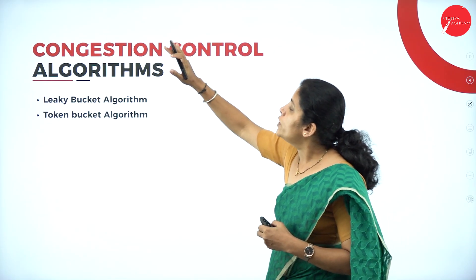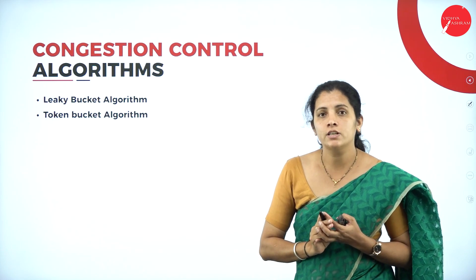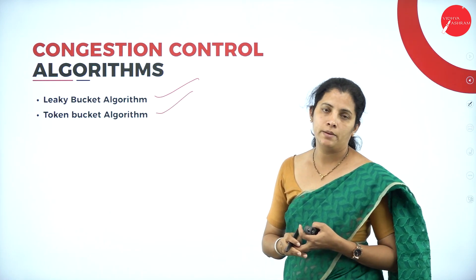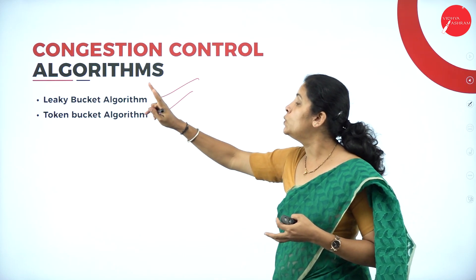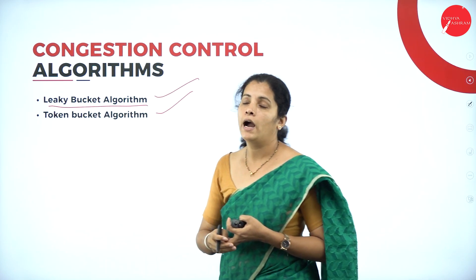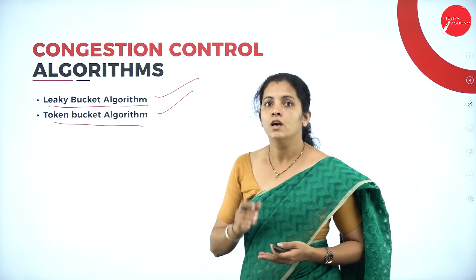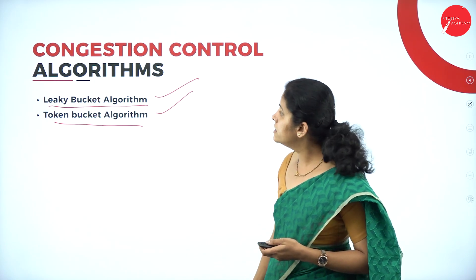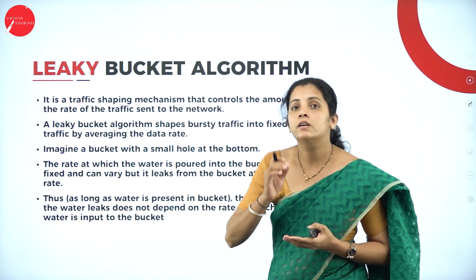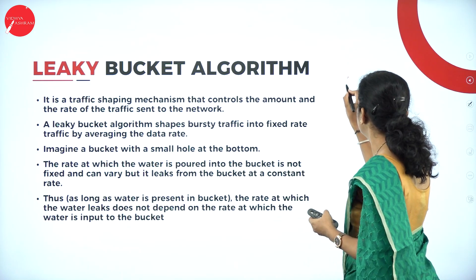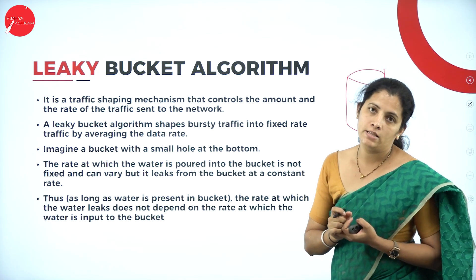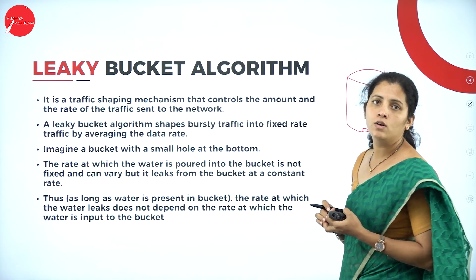We are going to have two types of congestion control algorithms: the leaky bucket algorithm and the token bucket algorithm. Moving further, let us see the first algorithm — the leaky bucket algorithm. I am going to consider a real-time example: consider a bucket with a small hole.